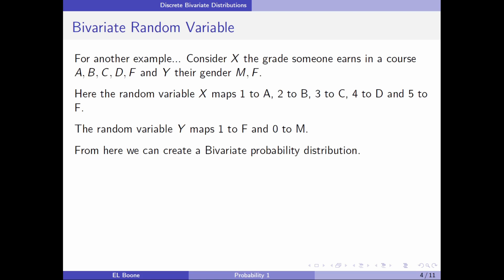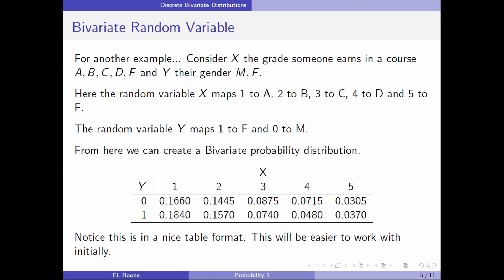For another example, consider X the grade someone earns in a course: A, B, C, D, and F, and Y their gender M, F. Here the random variable X maps 1 to A, 2 to B, 3 to C, 4 to D, and 5 to F. The random variable Y maps 1 to F and 0 to M. From here we can create a bivariate probability distribution, and this is in a nice table format.